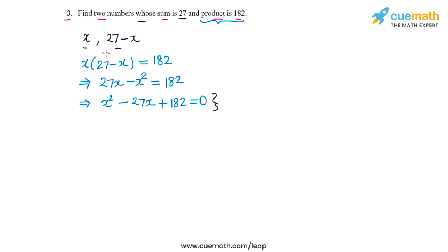So this quadratic equation models the situation given to us in the problem statement. Now to solve it, we will split the middle term minus 27x by finding two numbers p and q whose sum is equal to minus 27, which is the coefficient of x, and whose product is equal to the coefficient of x square, which is 1, times the constant term. So that's 182.